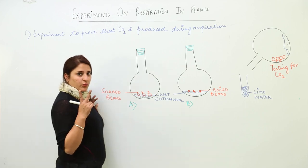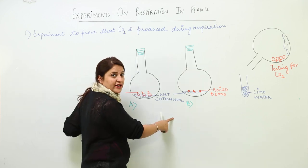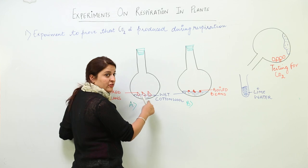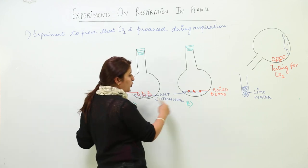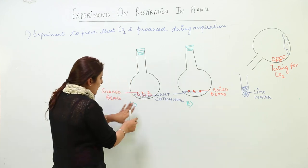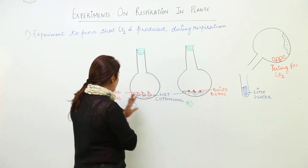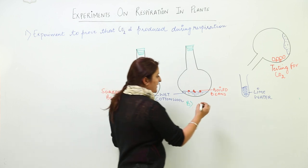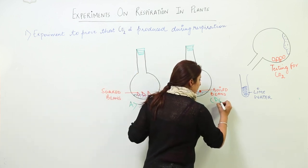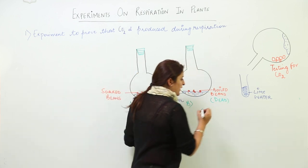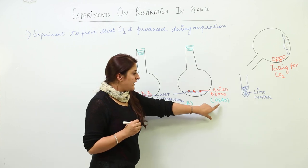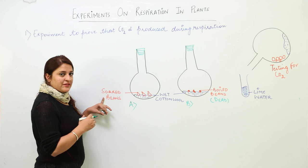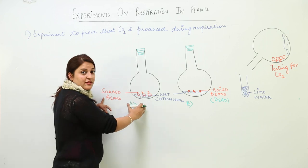We are going to take two conical flasks. In both flasks A and B, we will put a wet cotton wool or wet cotton swab. On these cotton swabs, we are going to put germinating seeds in one flask and boiled or dead beans in the other flask. These dead beans do not have the capacity to germinate and are placed in flask B, while the germinating or soaked beans are placed in flask A.